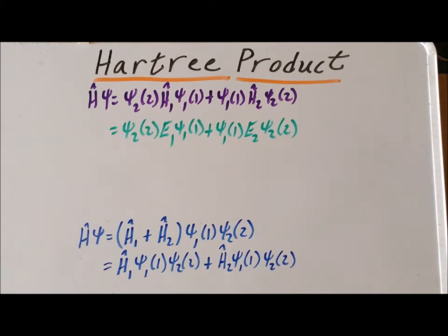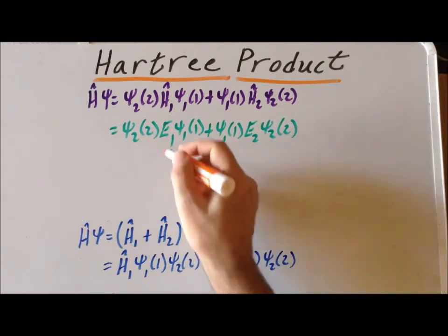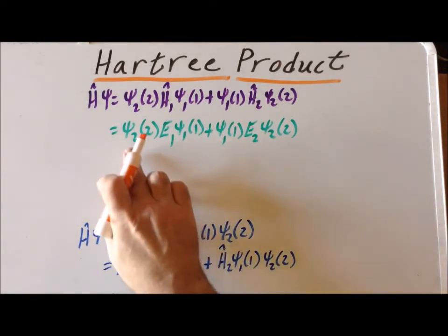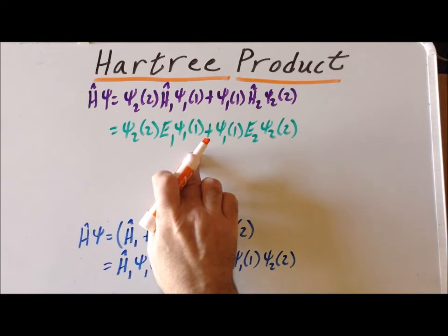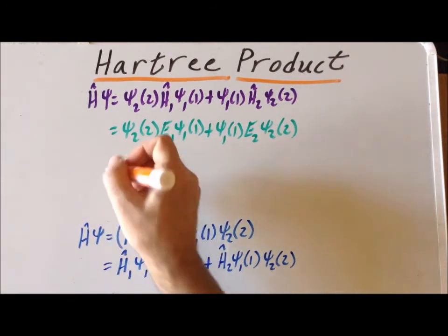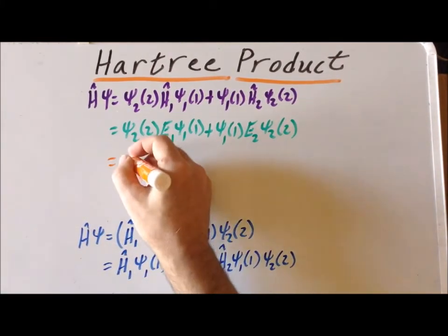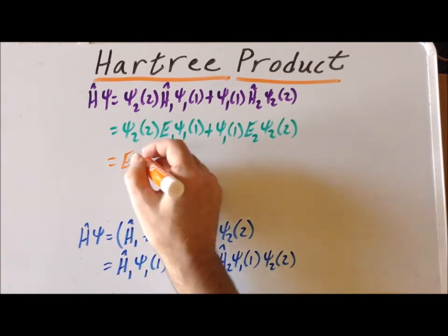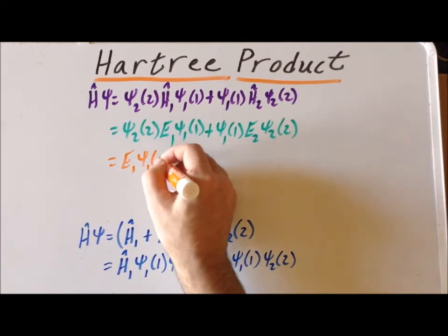So what do we get next? Well, I can simply, two functions multiplying each other, they commute, and the number commutes. So I can rewrite these in any order that I like. And the order that I like in this case is going to be E₁ times ψ₁ of 1 times ψ₂ of 2.